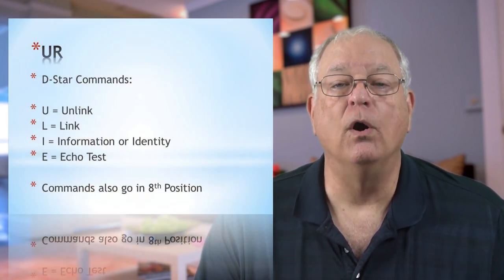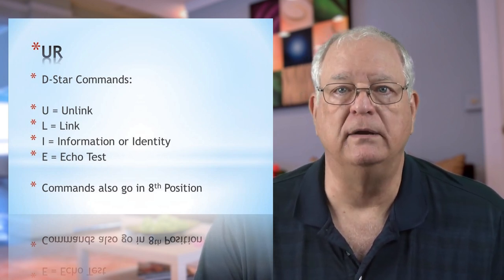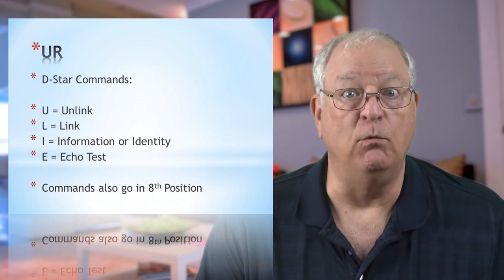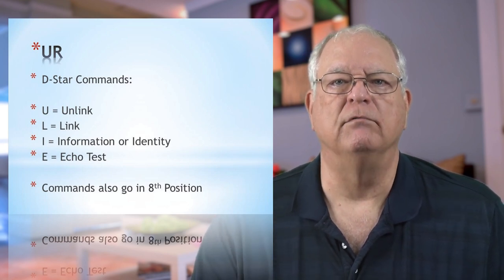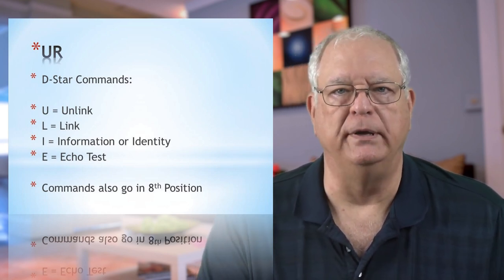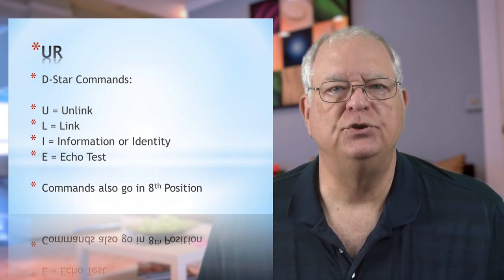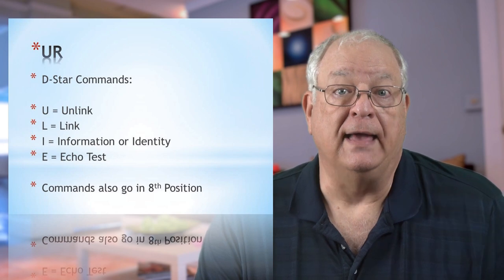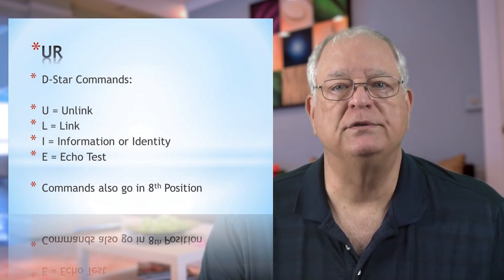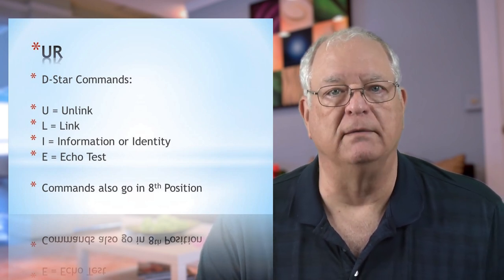What are those commands? First is the U or unlink command — it's used to unlink a repeater or reflector from your local repeater or hotspot, your RPT1. Next is L or link, used to link a repeater or reflector to your local repeater or hotspot. I or information is used to have the linked repeater or reflector tell you who it is. The ID31A+ will use its voice system to announce the callsign and the info will scroll across the bottom of the radio screen.